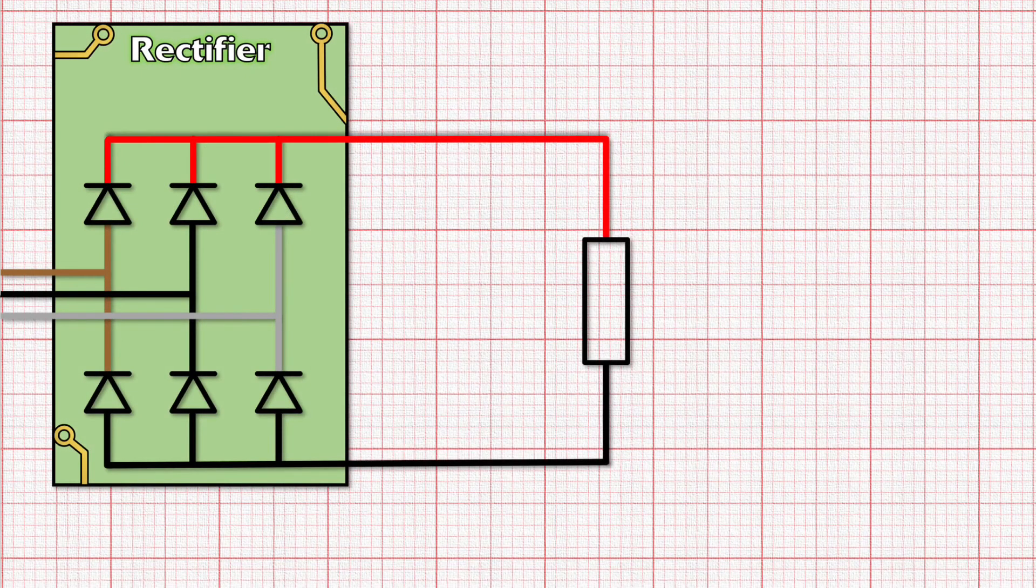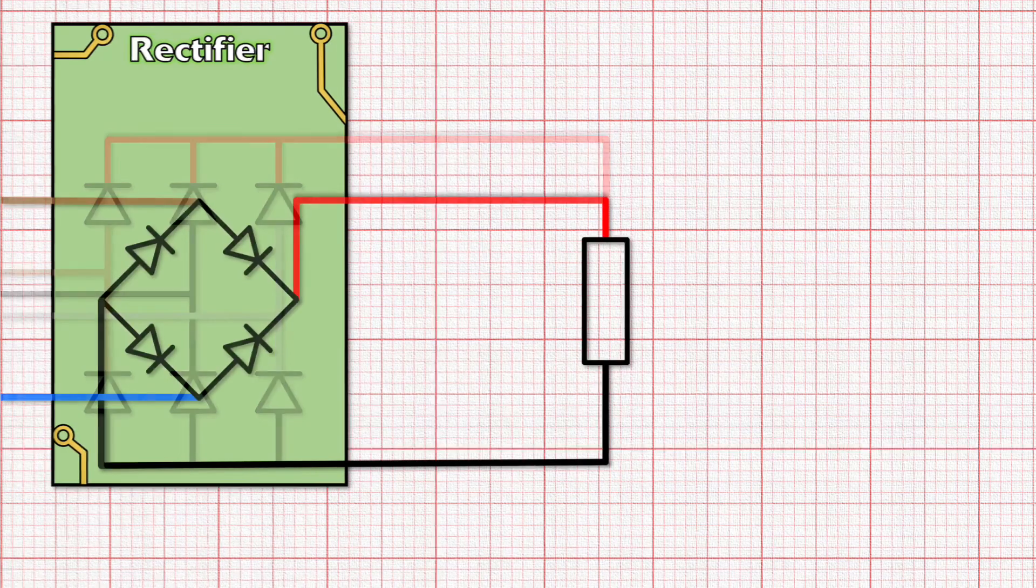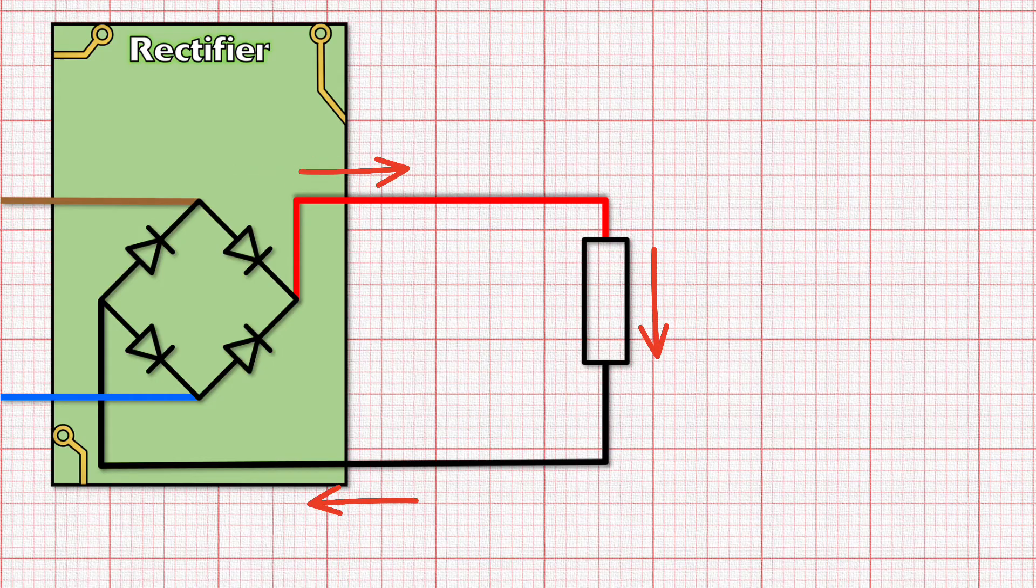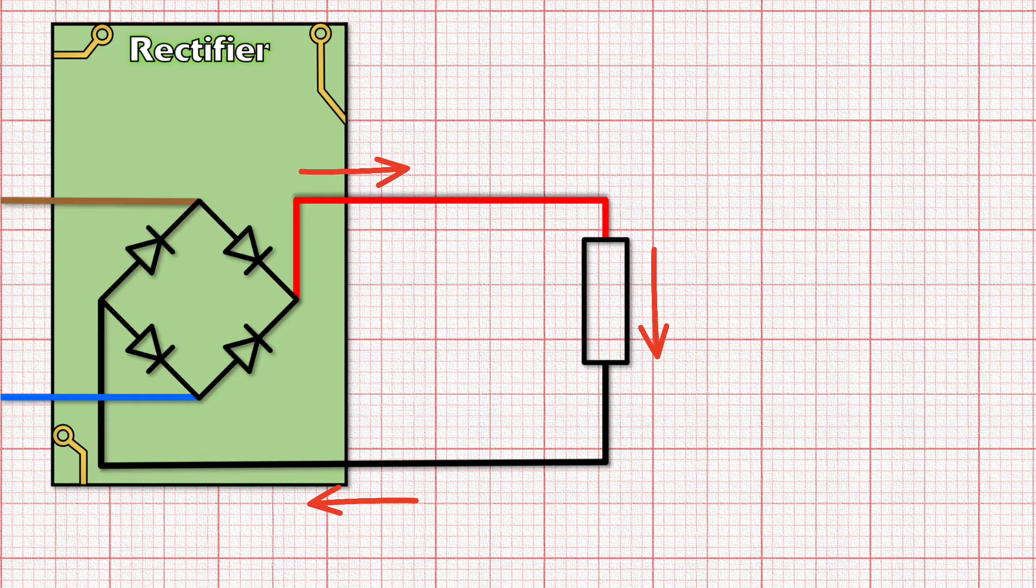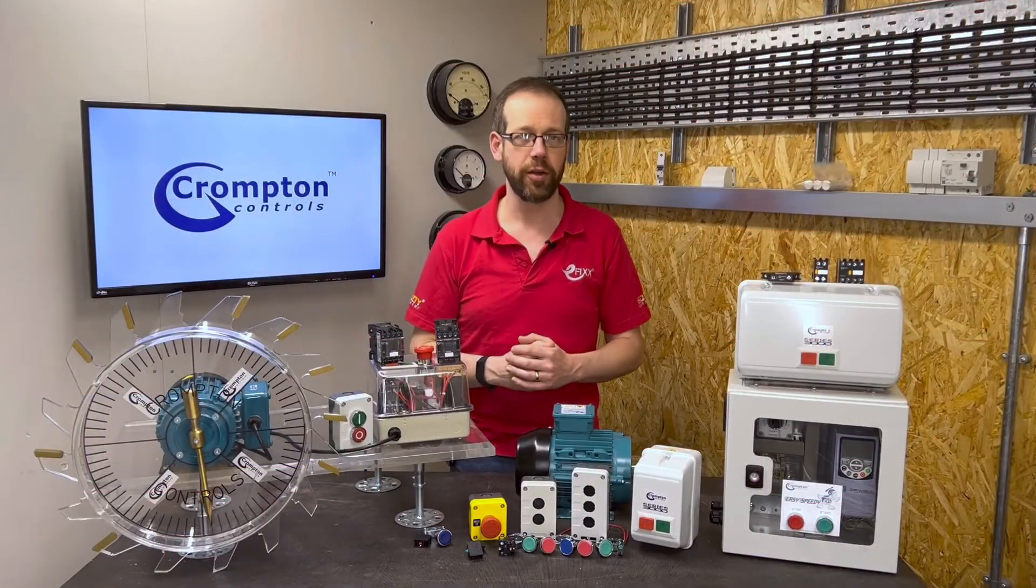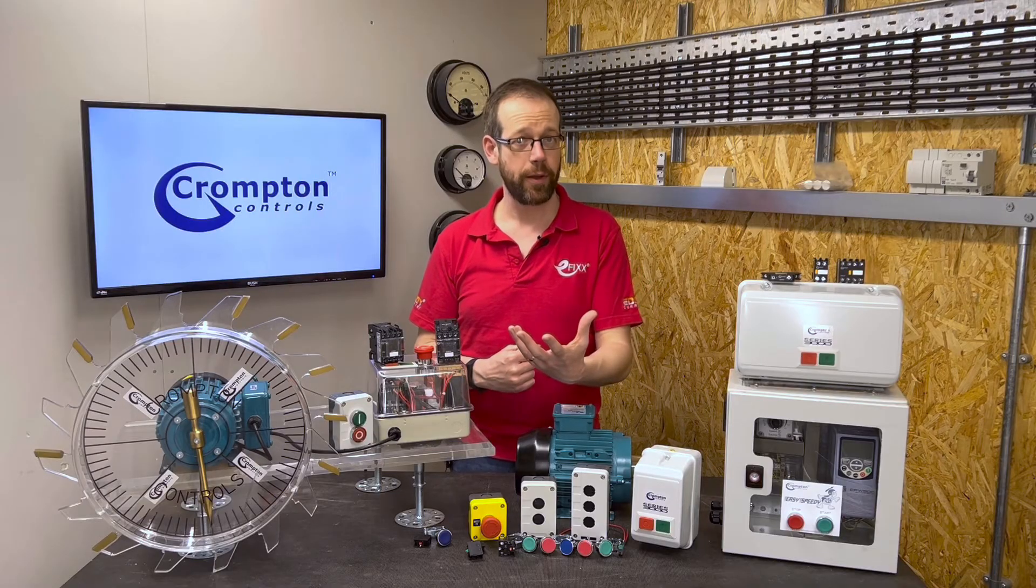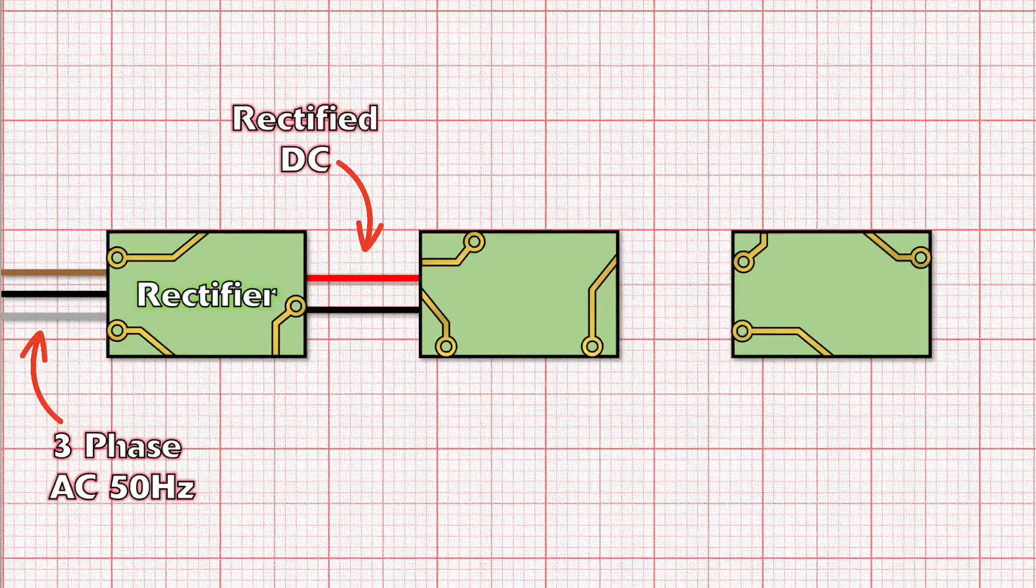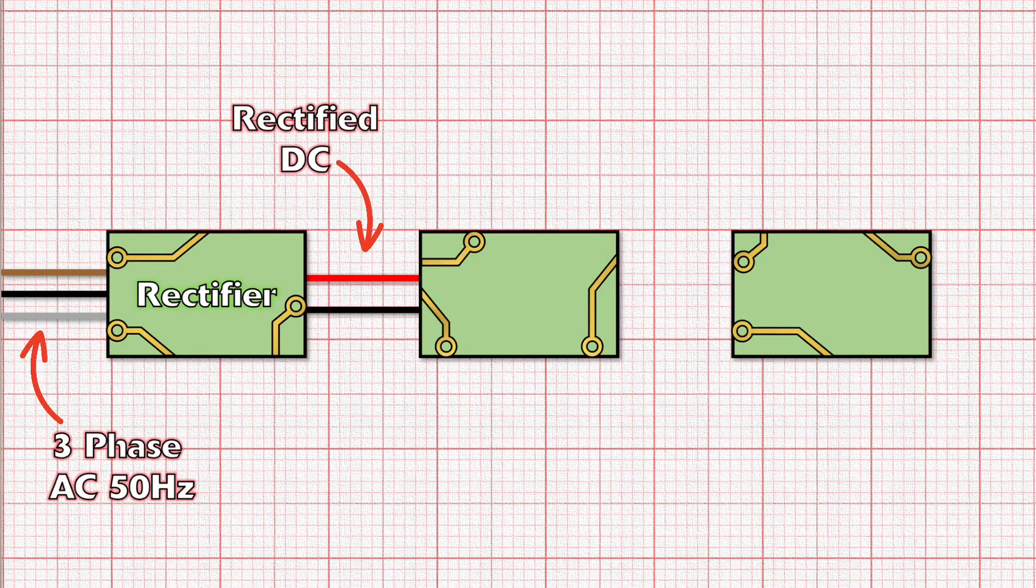Now one really clever thing about changing the supply to DC is that it means we can also use similar principles to convert a single phase AC supply to DC as well. This only requires the use of four diodes arranged in a slightly different way. But from this point on, everything that happens to the DC current will work as well for a single phase source as it does for a three-phase source. So as we'll see, what that means is that we can use the principles of a variable frequency drive to create a three-phase supply from a single phase supply. Clever.